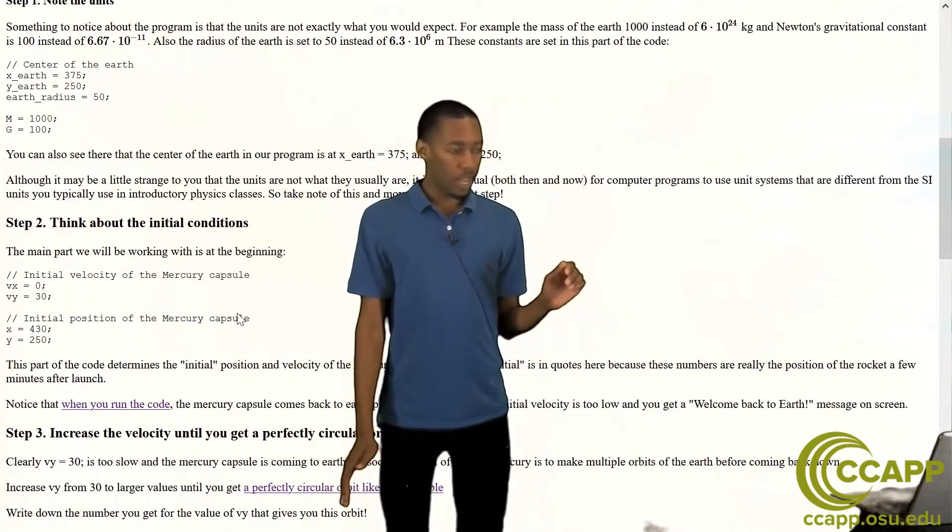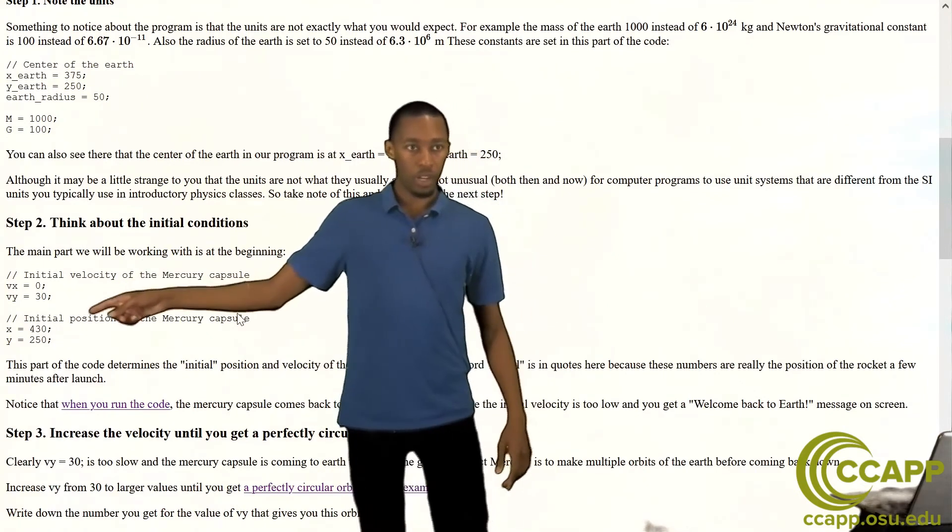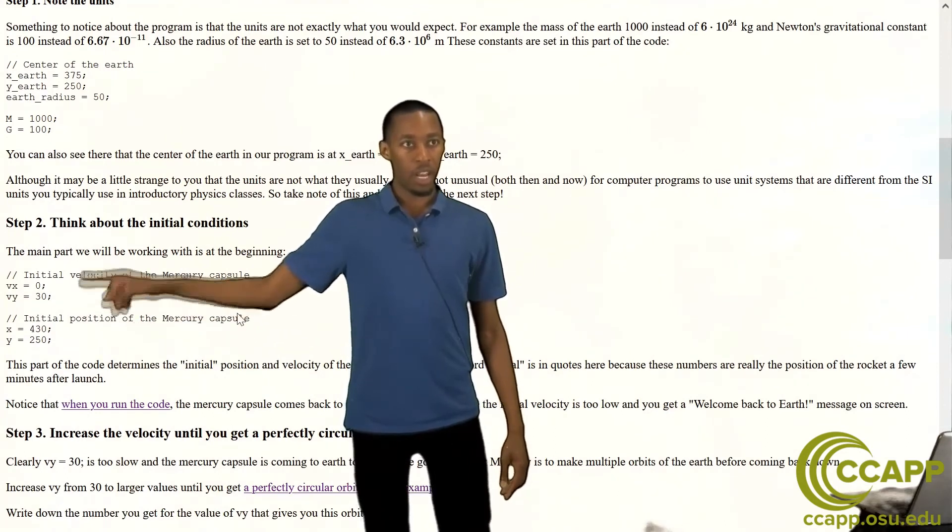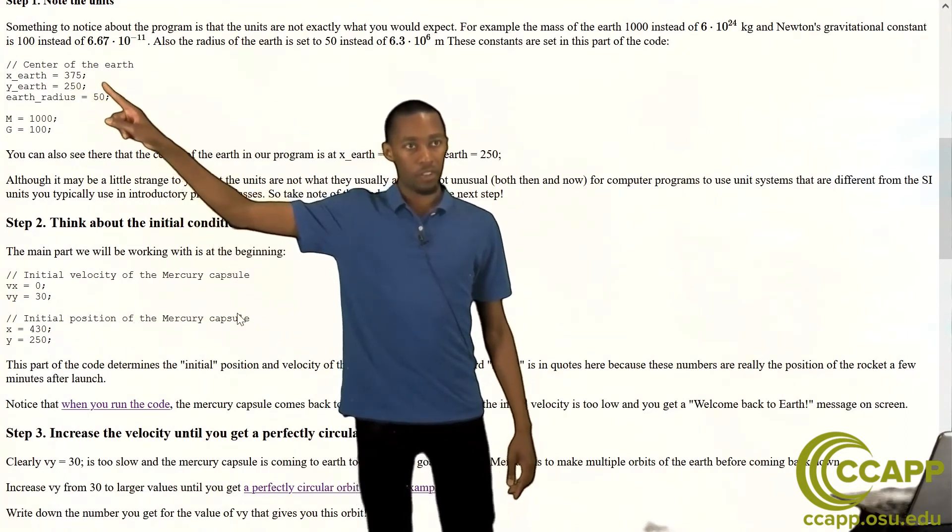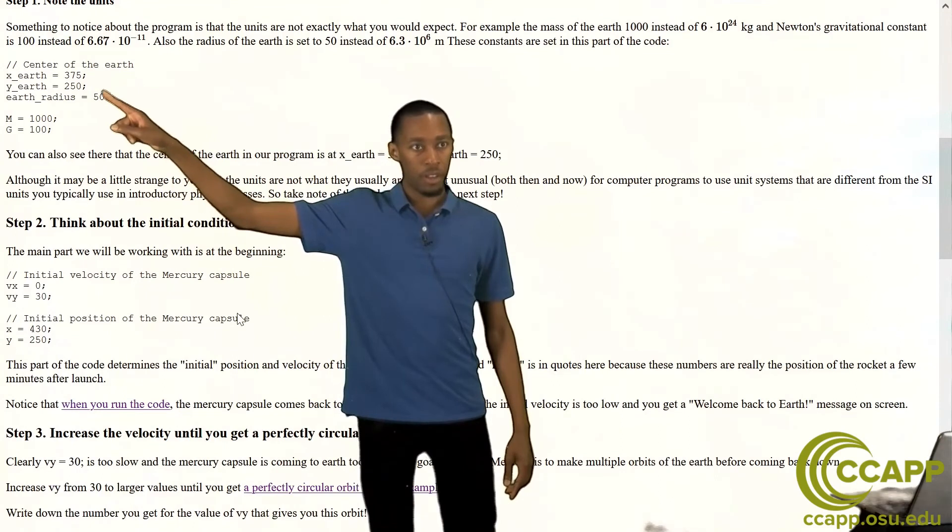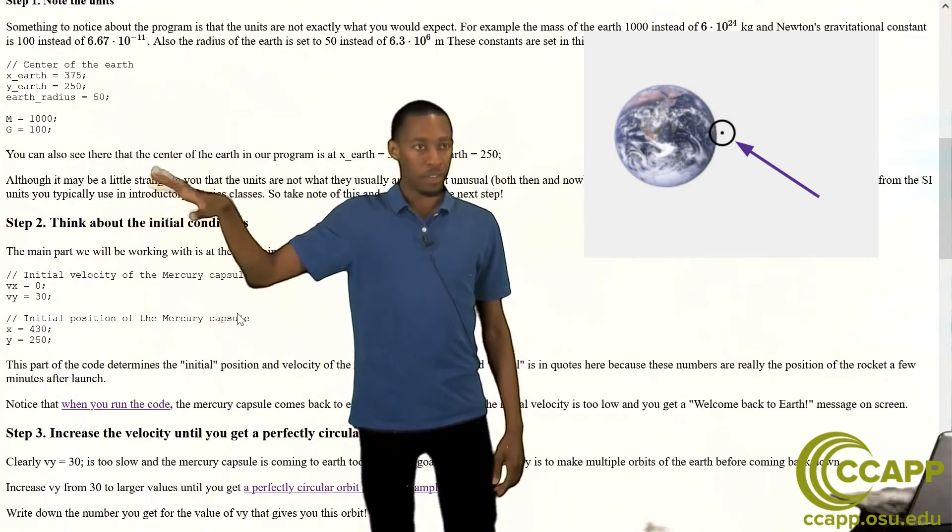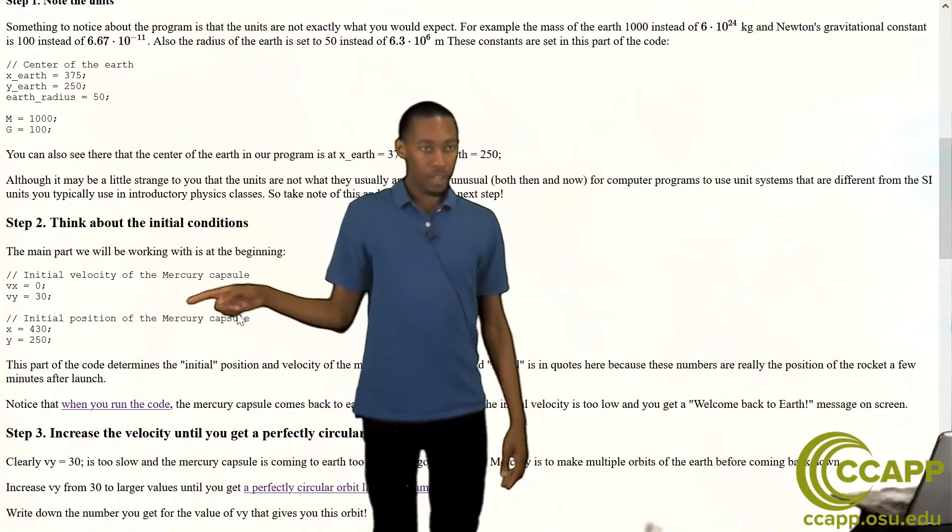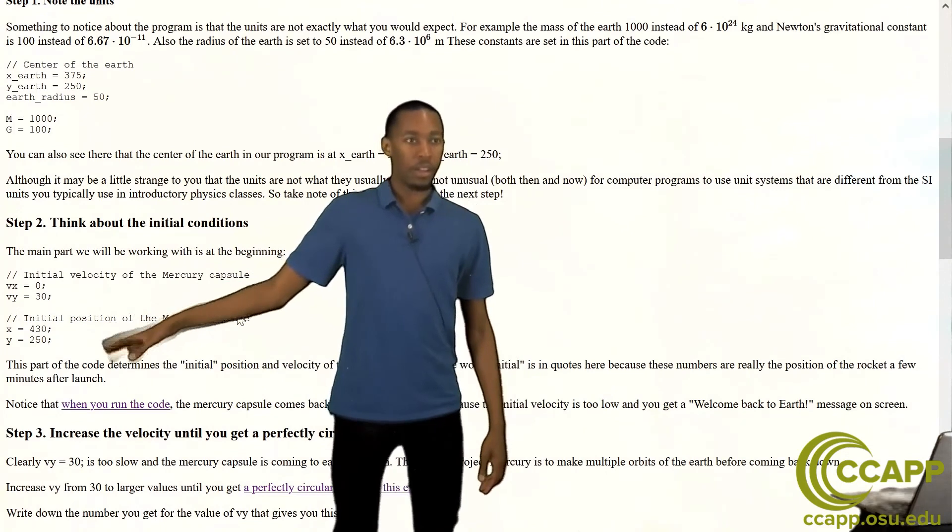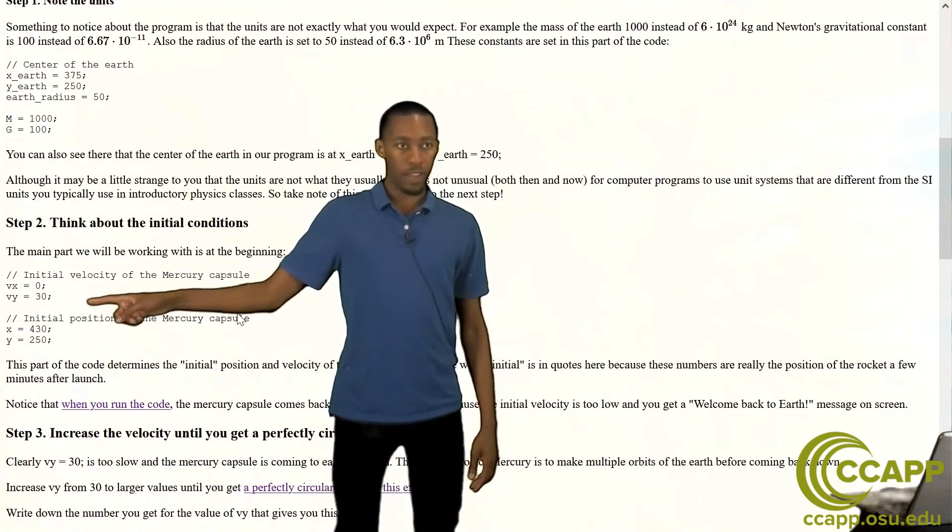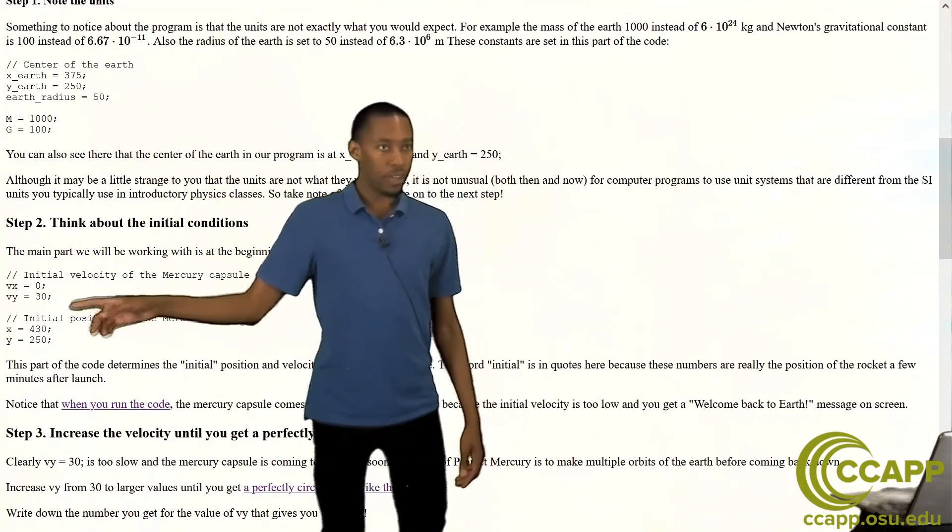So what's happening is that in this position we're going to give an initial position of X of 430 and Y of 250. And if you recall here comparing to the X position of the earth and the Y position of the earth this ends up putting us somewhat to the right of where the earth is located and at the same height as the center of the earth. So that explains how we're going to start with the position. As for the velocity of the mercury capsule we're going to start with only giving it a Y velocity and no X velocity. So let's see what that does.